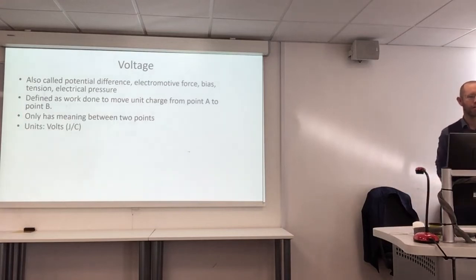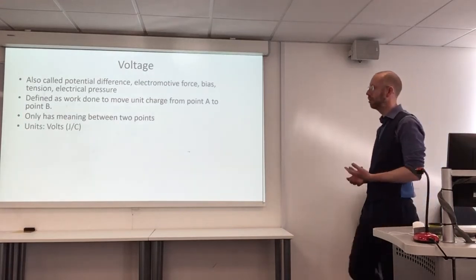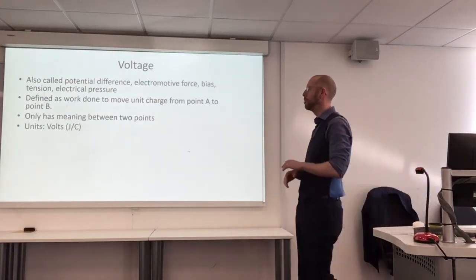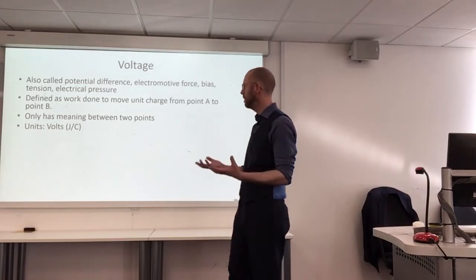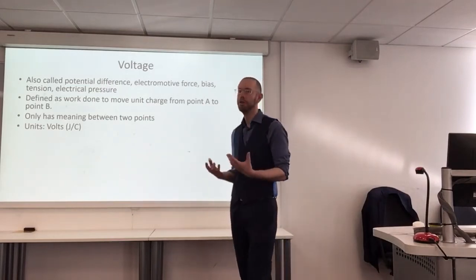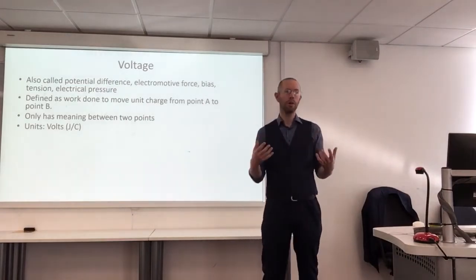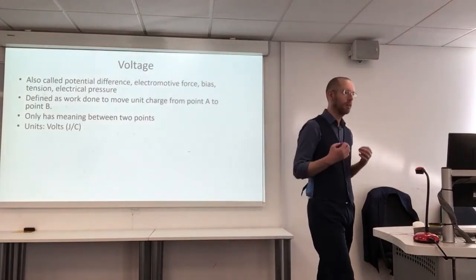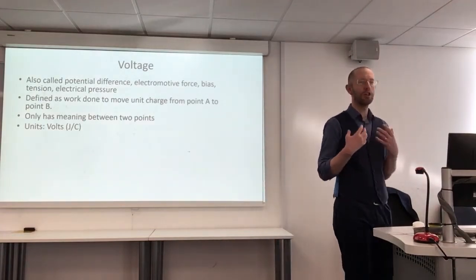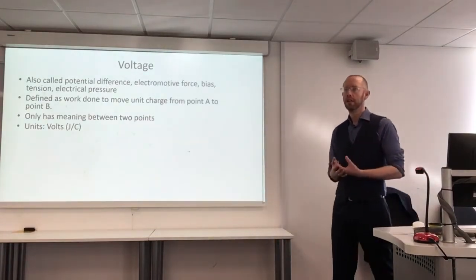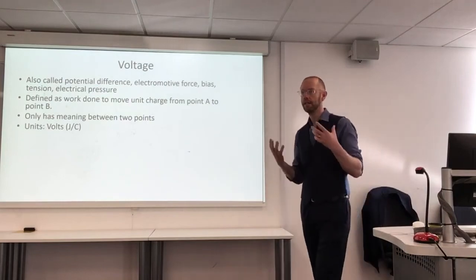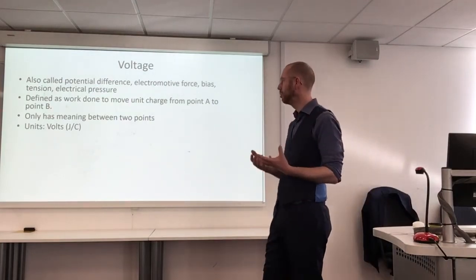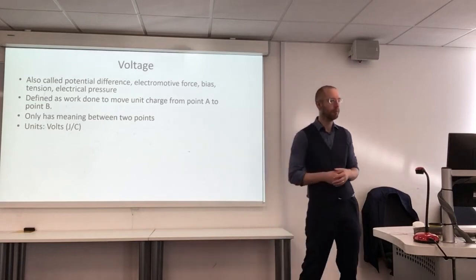Voltage has units of volts, which breaks down into the more fundamental units of joules per coulomb. One volt is one joule per coulomb, meaning each coulomb of charge can dissipate one joule of energy.